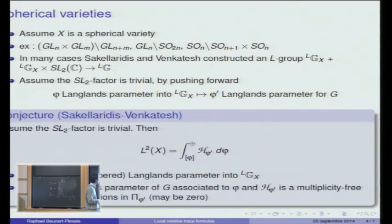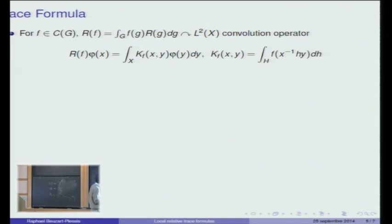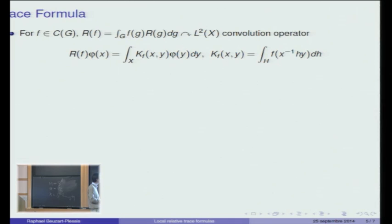Now I would like to talk about a tool we have to attack such a conjecture, namely trace formulas. We go back to our representation L2 of X, and instead of letting just the group act on that space, you may extend the action to some space of functions on G. For example, you may take a continuous function F on G and define an operator R(F) by convolution on this space. This operator is given by a kernel K_F(x, y), a function of two variables x and y living in X, meaning the action of R(F) on a function phi is given by integration of the kernel against phi — so R(F) is like an infinite-dimensional matrix whose entries are K_F(x, y).